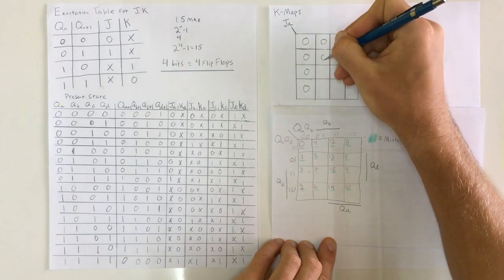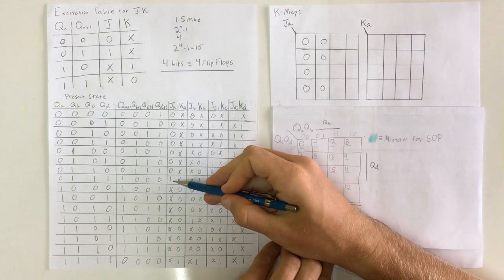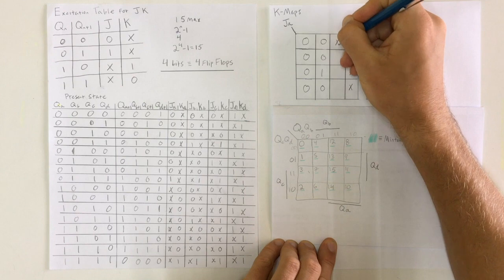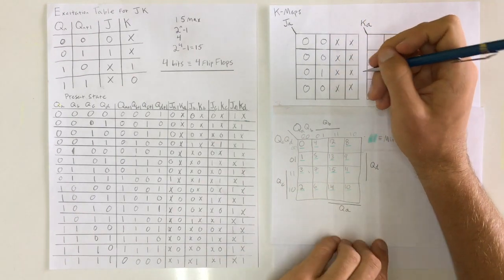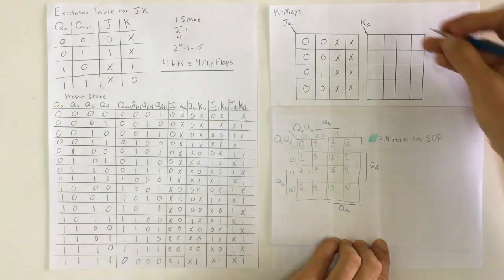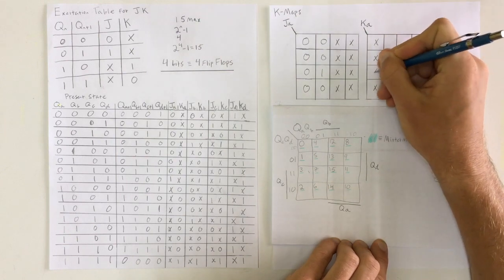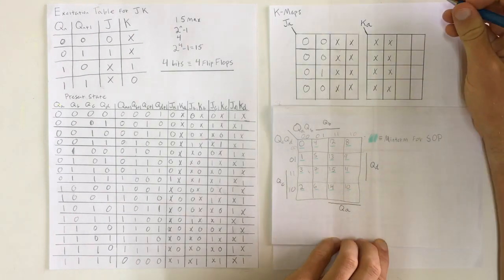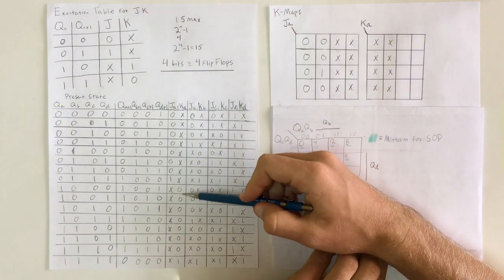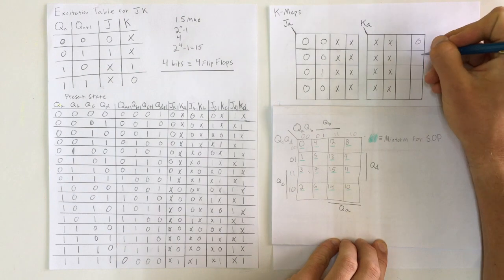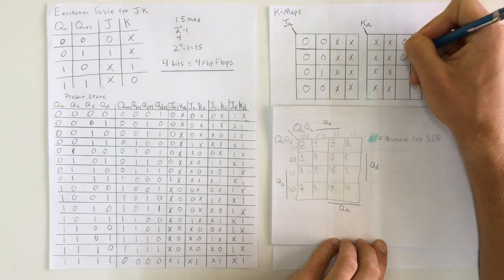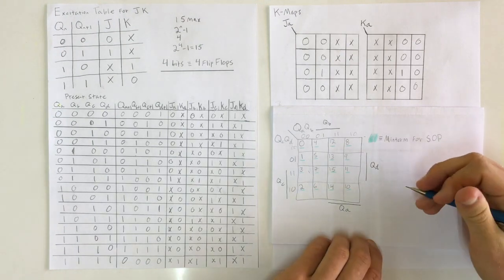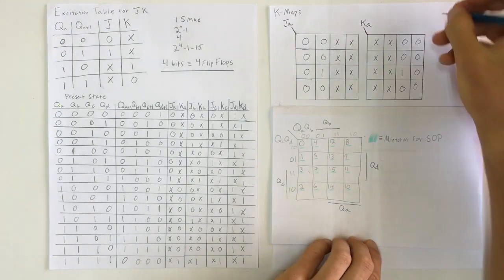Going down the column following the key configuration: states 0, 1, 2, 3 are zeros; 4, 5, 6 are zeros; state 7 is a one; the rest are don't cares — states 12, 13, 14, and 15. For KA, following the same order, all of my first eight states (0 to 7) are don't cares, and then it changes to zeros, with finally a one in the very last position — state 15.